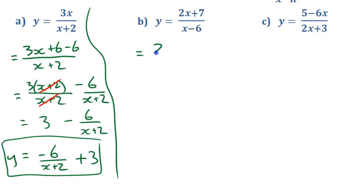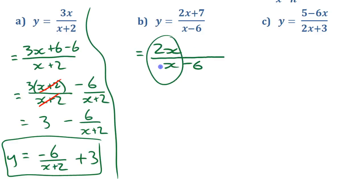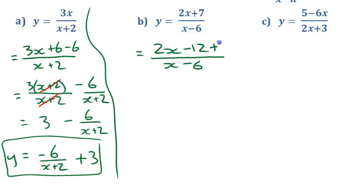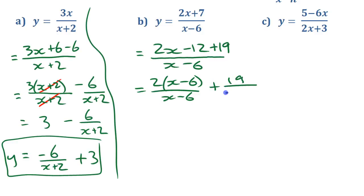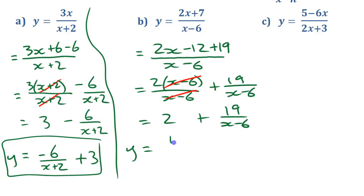Second example: two x plus seven over x minus six. We leave the seven and focus on two x. The denominator is x minus six, so to get a common factor we need negative twelve in the numerator since the ratio is twice as big. Since we have seven, we write seven as negative twelve plus nineteen. So we split as two x minus six over x minus six, plus nineteen over x minus six. The first fraction simplifies to two, giving us two plus nineteen over x minus six, or in standard order: nineteen over x minus six, plus two.